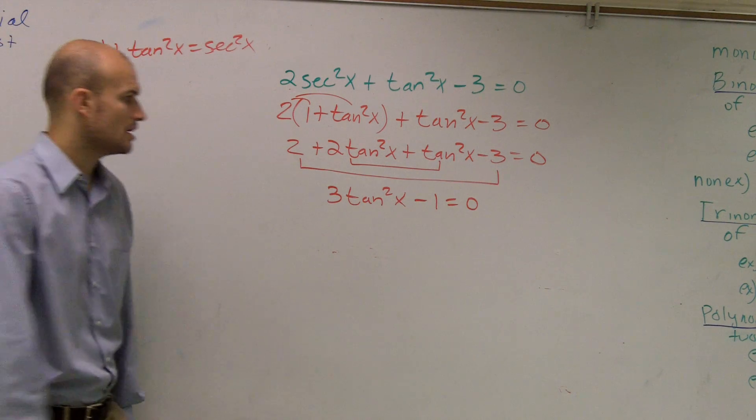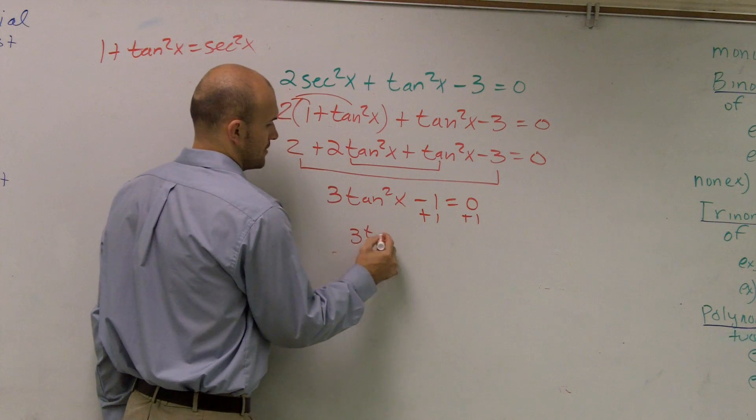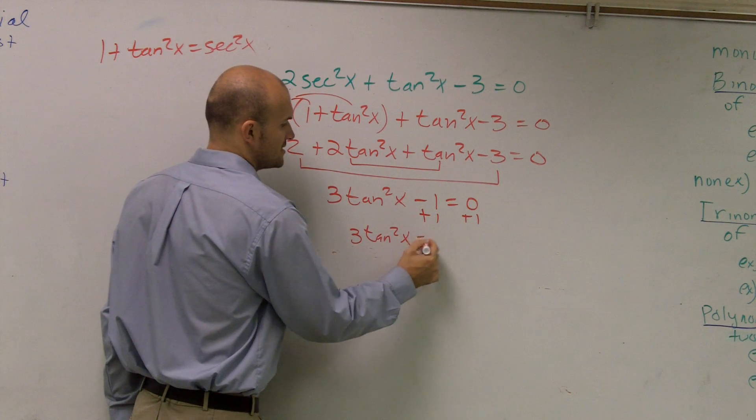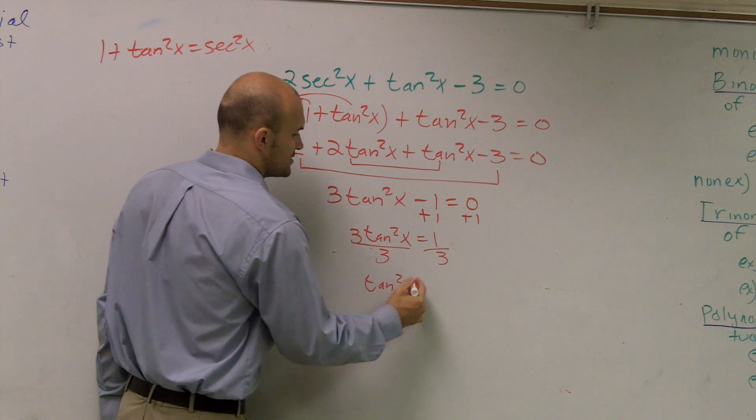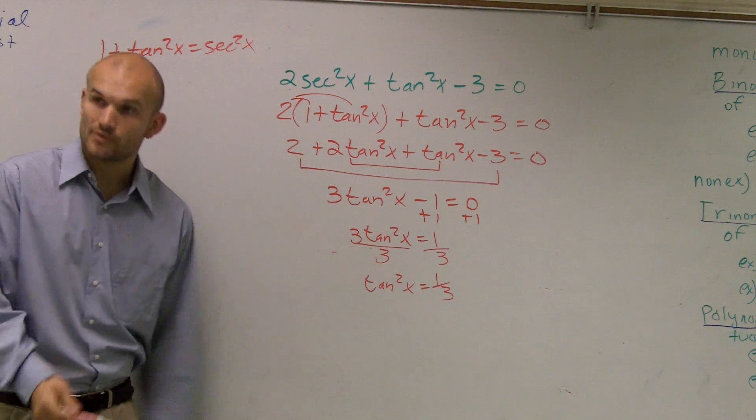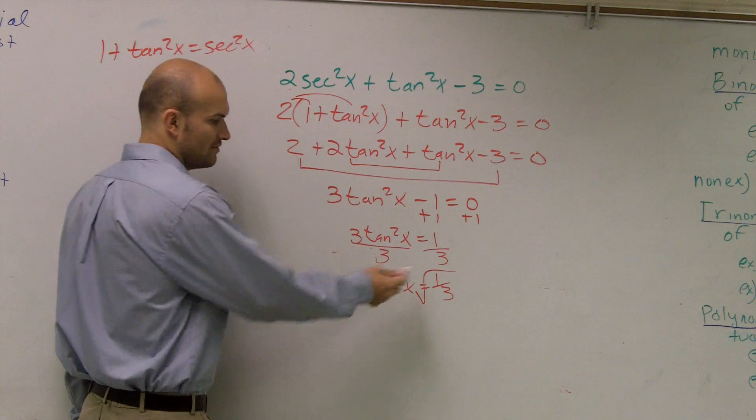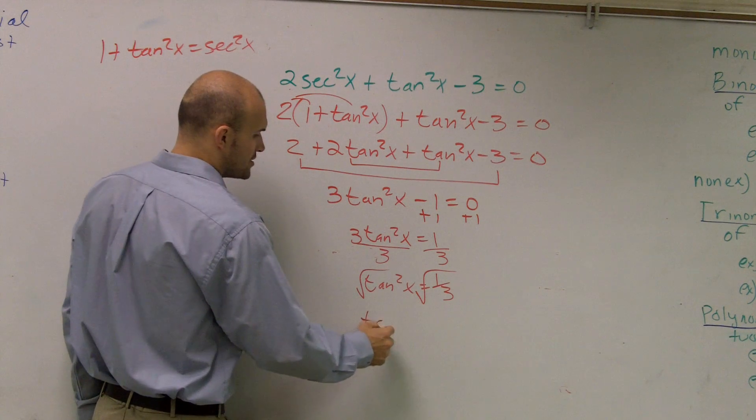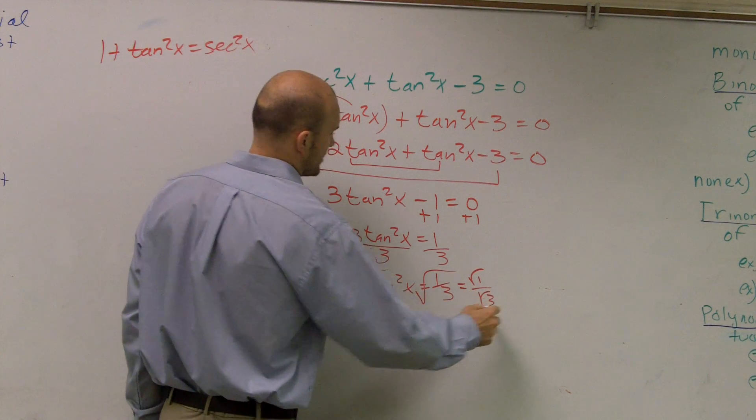Now we just simply need to solve for our tangent of x. So I'll add 1 to both sides. 3 tan squared of x equals 1 divided by 3. Tan squared of x equals 1 over 3. Then to get rid of the square root, I need to undo by taking the square root of both sides. So I have tangent of x, and remember this equals square root of 1 over square root of 3.